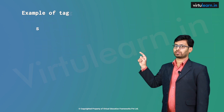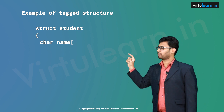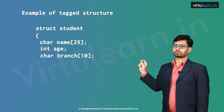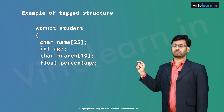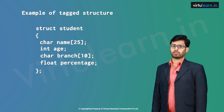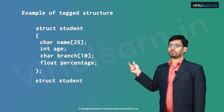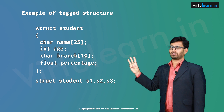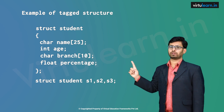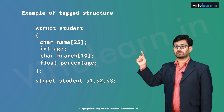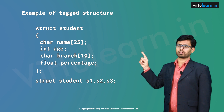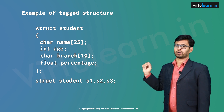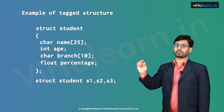Let us see one example. 'struct student' — within the curly brace: char name of 25, int age, char branch of size 10, float percentage — close the structure with a semicolon. Then we declare 'struct student s1, s2, s3', meaning we have initialized 3 structure variables. The size of s1 will be the total sum of all individual variable sizes: 25 plus 4 is 29, plus 10 is 39, plus 4 is 43. So the total size allocated for s1 will be 43 bytes.